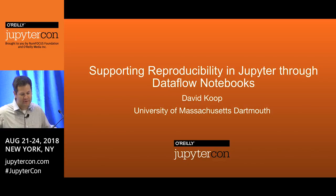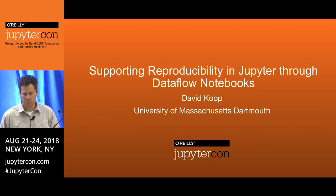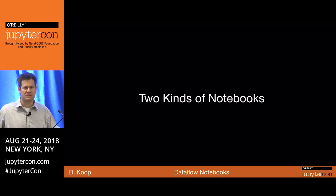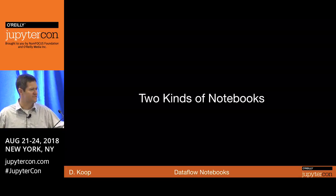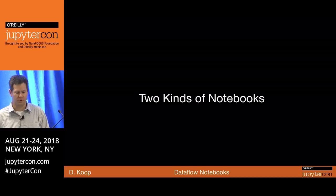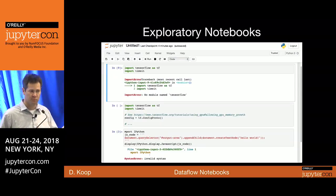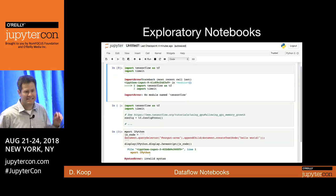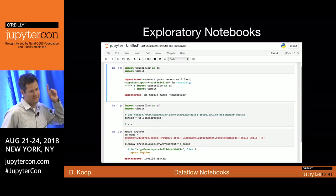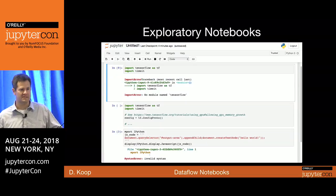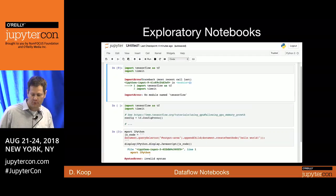The official title of the talk is Supporting Reproducibility in Jupyter Through Dataflow Notebooks. Something that's come up before is this idea that Jupyter Notebooks spans two different styles of notebooks. One of them you're probably familiar with if you've done notebooks — you can identify them by the file names: Untitled 1, Untitled 27, Untitled 152.